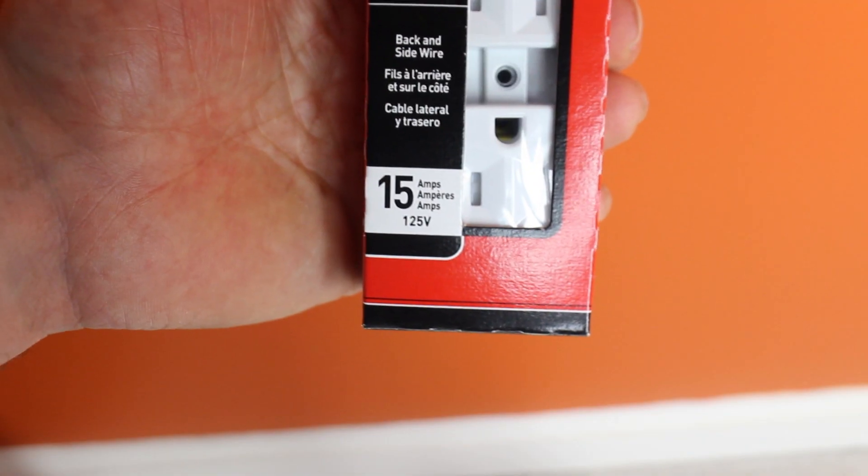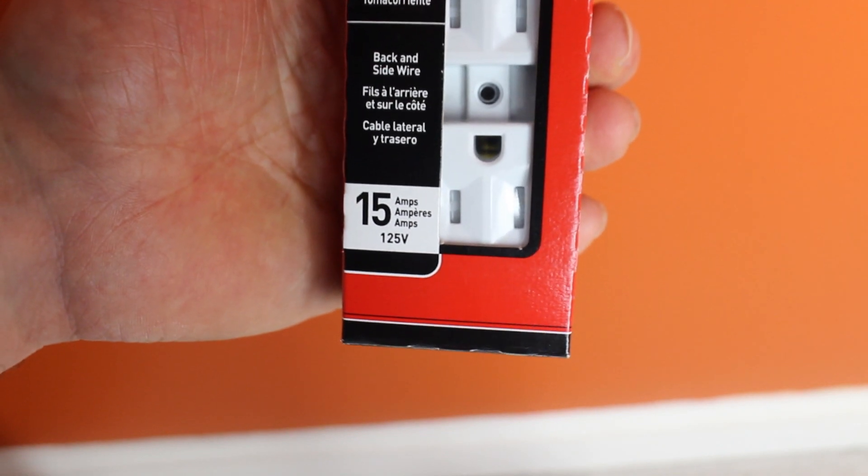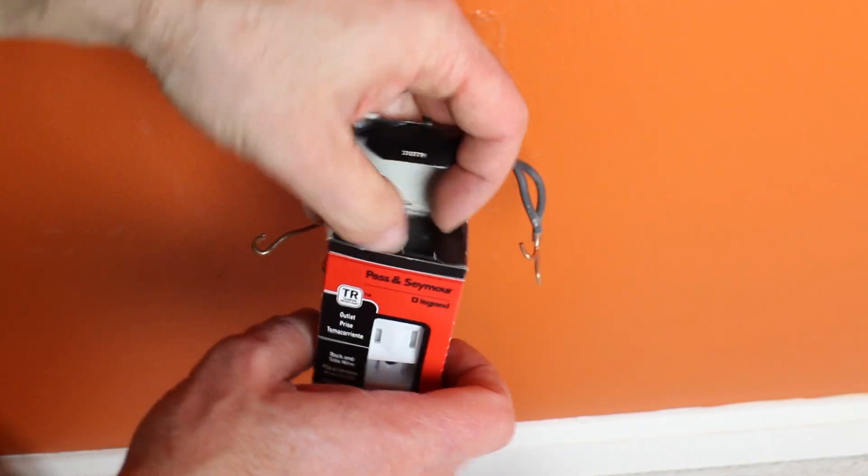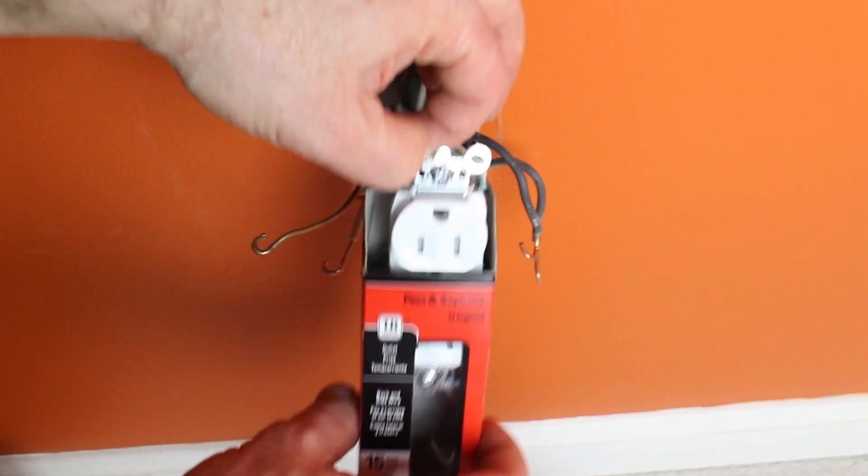And these days, you should always buy a tamper-resistant outlet, especially if you have kids. And a lot of local codes require it to make sure you check your local code.